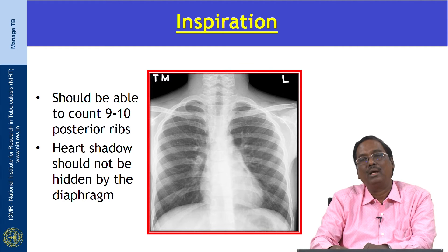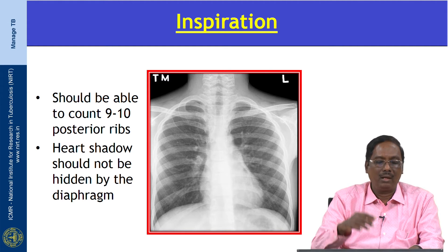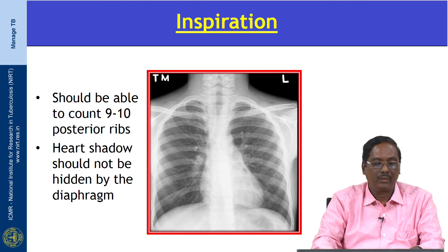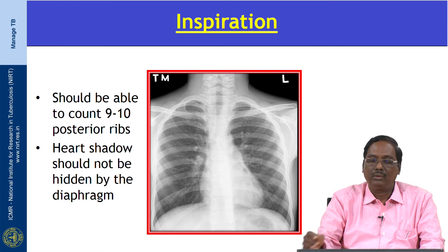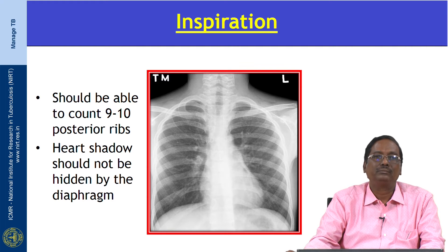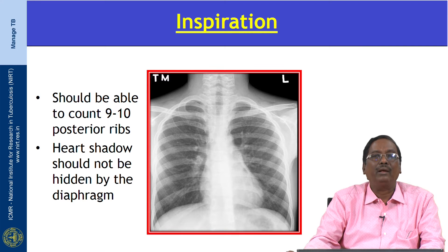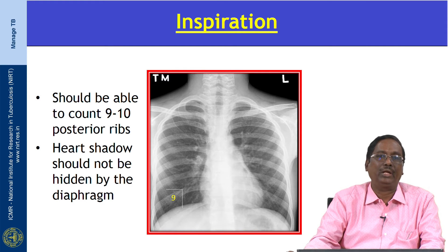Next is inspiration. Conventionally, all X-rays are acquired in an erect posture in a maximal inspiratory phase. To assess the degree of inspiration, count the ribs from top to bottom. In a normal X-ray, you should be able to count 9 to 10 posterior ribs, and the diaphragm should intersect between the 9th and 10th posterior ribs. The heart shadow should not be hidden by the diaphragm.